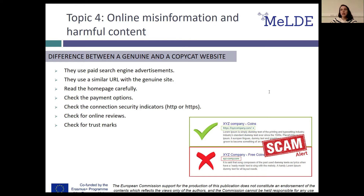Also, copycat websites use a similar URL to the genuine site. Pay close attention to the URL of the page. The suffix of the URL will indicate if the site is official or copycat. For example, if the suffix is gov.uk, this indicates that the site is authentic. Otherwise, if the suffix is .org, it is not certain that the site is official.